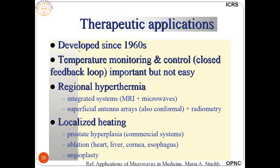This technique was developed starting in the 1960s. People use MRI plus microwaves as an integrated system. Superficial antenna arrays, conformal applicators plus radiometry, are also used. For localized heating of the prostate, commercial systems and ablation of the heart, liver, cornea, and for angioplasty, microwaves are used.